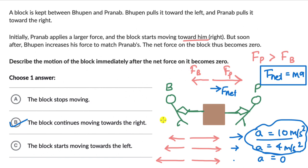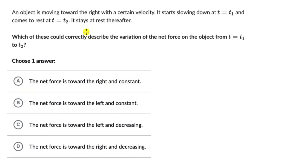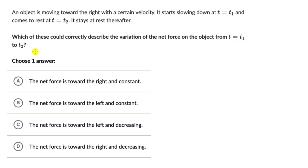Let's look at one more question. Here we have an object moving to the right with a certain velocity. It starts slowing down at time t1 and comes to rest at time t2. It stays at rest thereafter. Which of these could correctly describe the variation of the net force on the object from t1 to t2?